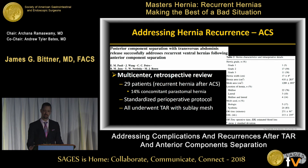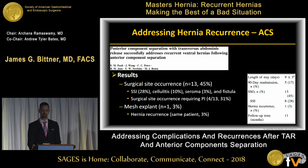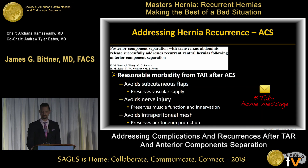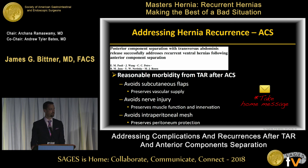Most hernias were midline and substantial in size — grade two and grade three. Their surgical site occurrence rate was about 45%, most of which were surgical site infections, which shouldn't particularly surprise anyone given the hernia defect sizes and grades. Only one patient had a mesh explant, essentially becoming the hernia recurrence with a mean follow-up of about 11 months. The take-home: there's not zero morbidity associated with posterior component separation after anterior component separation, but there are advantages including avoidance of subcutaneous flaps, potential nerve injury, and intraperitoneal mesh placement.